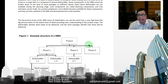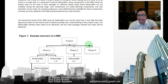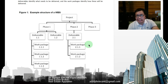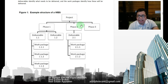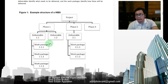Some components in the WBS cannot be broken down to the level of work packages because sufficient details are not available during the planning stage. These are called planning components — only estimates can be made. As the project progresses, more details become available and these components are updated and decomposed into smaller activities. The hierarchical level of the WBS means all stakeholders can see the work from a very high level — the big picture — down to the lowest level of detail.